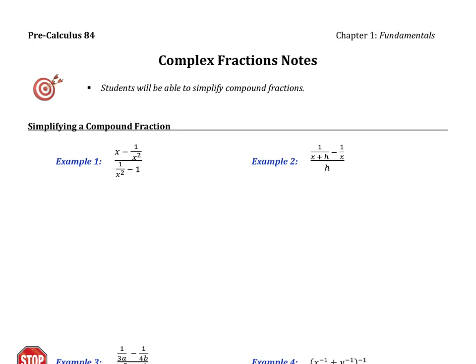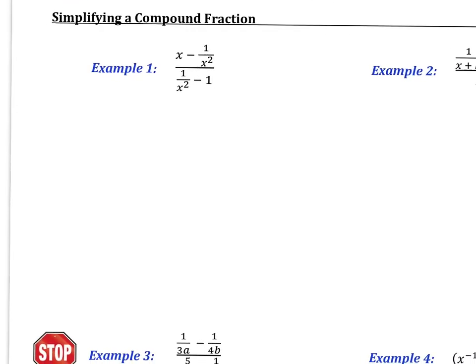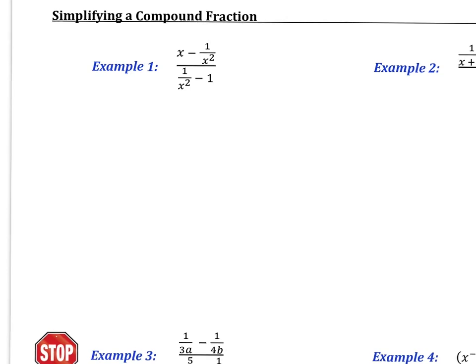I'm going to dive right in to example number one. If you look at this one, I'm going to look at the two denominators of the fractions that are within the fraction, and they're x squared. So that means that my LCD here is x squared. I'm going to multiply the top and the bottom by x squared — the LCD.